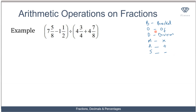BODMAS tells us the order in which we carry out operations. When we have an arithmetic operation we deal with variables in the Brackets first, then move to Off (division), Multiplication, Addition, and Subtraction. In this example, we first simplify what is in the brackets, and I suggest we convert the mixed fractions to improper fractions to work them out more easily.